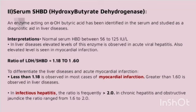To differentiate liver diseases from acute myocardial infarction: a ratio less than 1.18 is observed in most cases of myocardial infarction, greater than 1.6 is observed in liver diseases, in infectious hepatitis the ratio is frequently greater than 2.0, and in chronic hepatitis and obstructive jaundice the ratio is from 1.6 to 2.0.